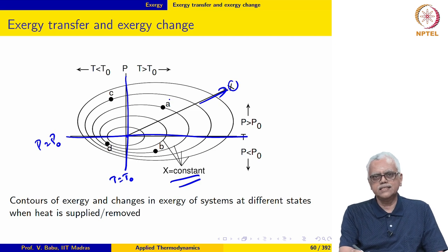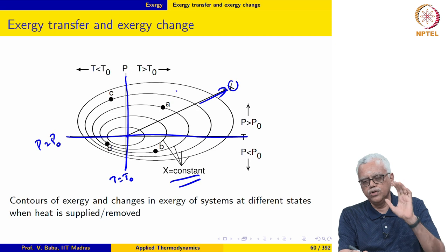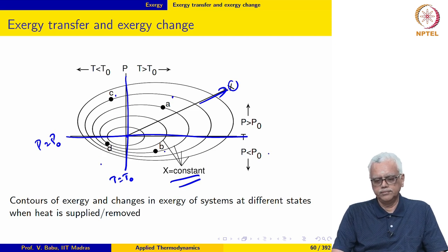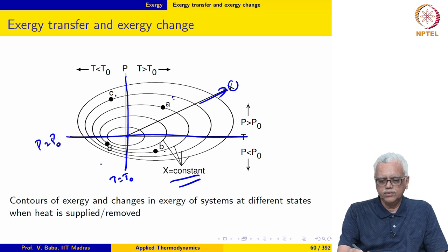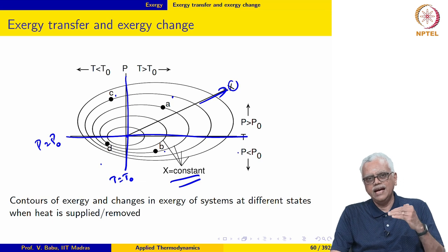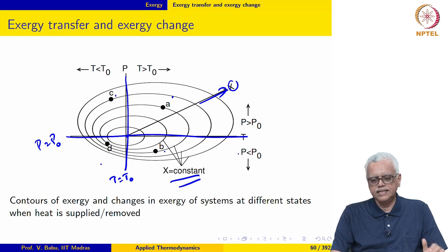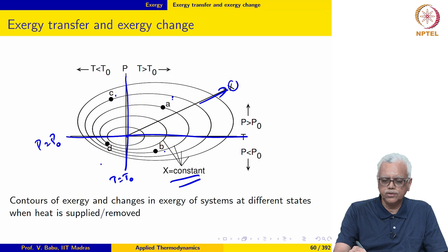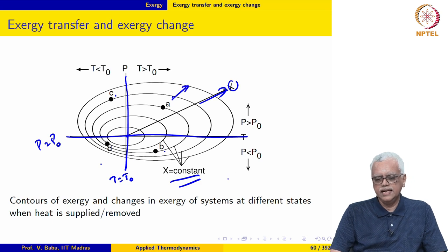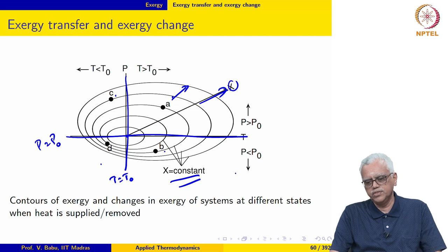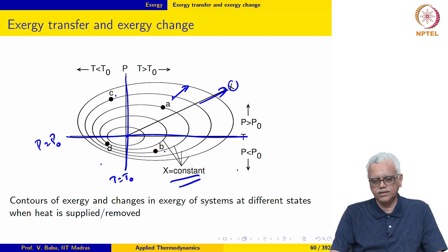Let us consider systems initially at four different states A, B, C, and D. If we take a system initially at state A — which is at a temperature greater than T₀ — and add heat to it, its temperature increases. Since it started above T₀, its temperature increases further, and its new state is in the radially outward direction. So its exergy also increases.